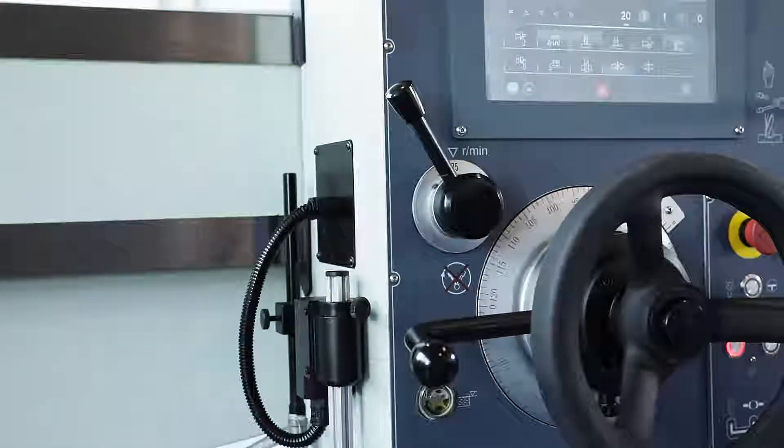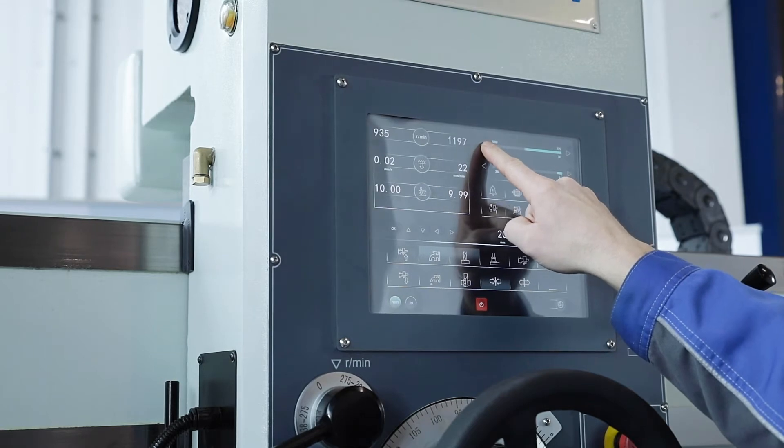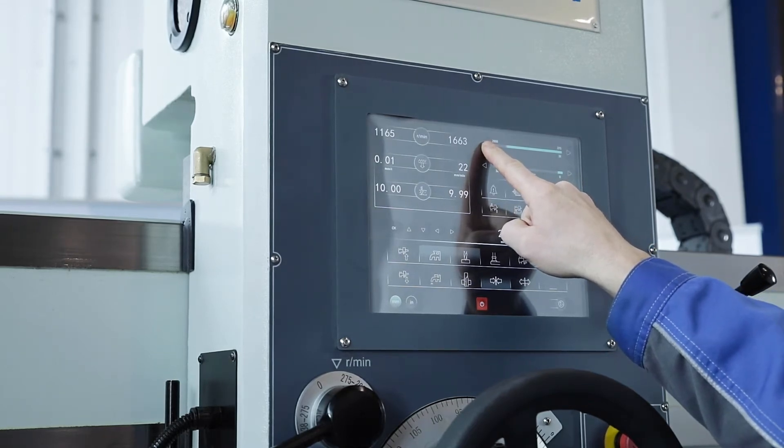The machine has two gear steps and the RPM can be infinitely varied and displayed at the monitor. The quill's stepless speed is controlled by a servo motor.